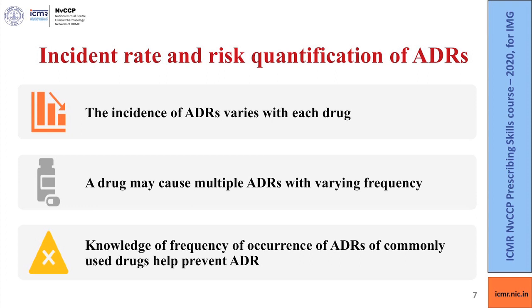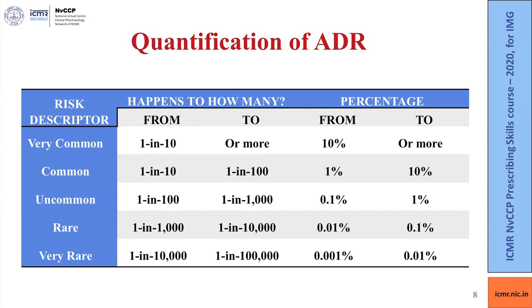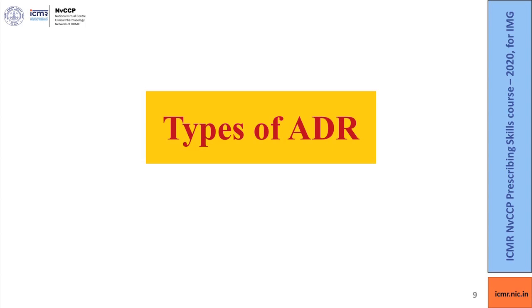A drug may cause multiple ADRs with varying frequency. For example, chloroquine may frequently cause nausea and vomiting; however, it has certain other adverse effects like hepatotoxicity or retinopathy which occur with lesser frequency. Knowledge of frequency and occurrence of ADRs of commonly used drugs will help prevent them. ADRs are quantified based on how frequently they occur in patients, with risk descriptors varying from very common to very rare. Very common ADRs occur in 1 in 10 patients, while very rare ones occur in 1 in 10,000 to 1 in 100,000 patients.